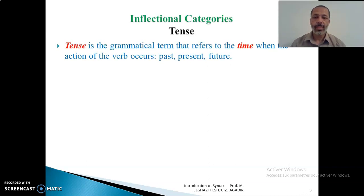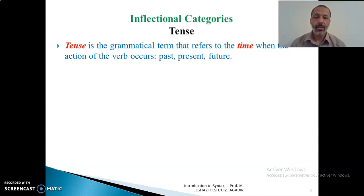Tense is the grammatical term that refers to the time when the action of the verb occurs. We can speak about past, present, or future tense. The question is: what is the difference between tense and time? Simply, tense is a grammatical term, whereas time refers to what exists in nature. When you say past, present, or future, it is a term referring to time in its natural flow.